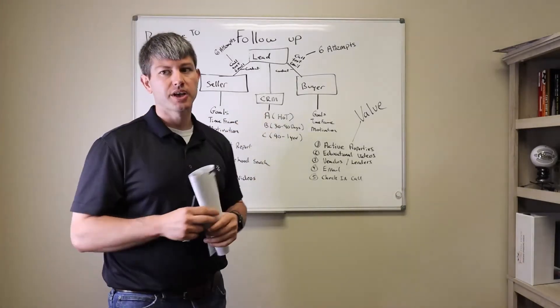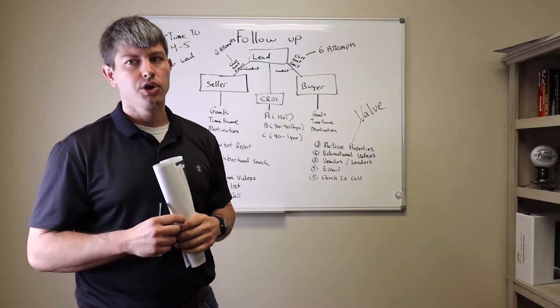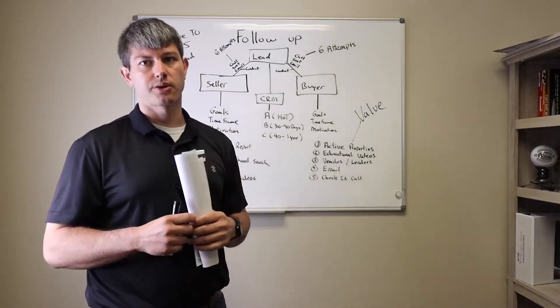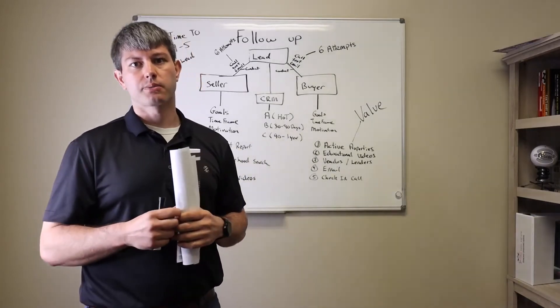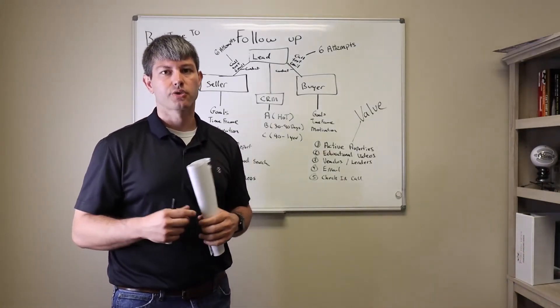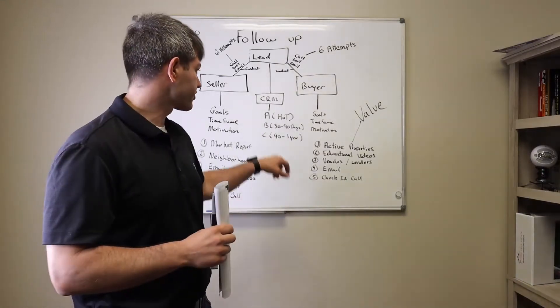If they're an A, which means they're looking to buy or sell in the next 30 days, we know how often we want to communicate to them. We want to be communicating to them at a minimum every week, mostly multiple times throughout the week, because they're hot and ready to go.